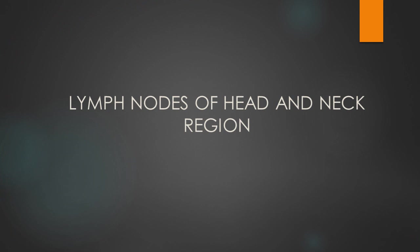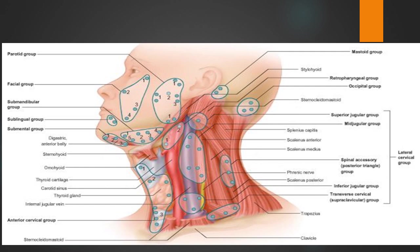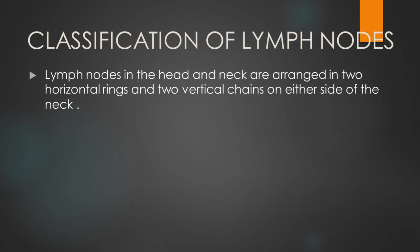Coming to the last part — the lymph nodes of the head and neck. In the figure, different types of lymph nodes are seen: parotid, submandibular, sublingual, and submental. Lymph nodes in the head and neck are arranged into two horizontal rings and two vertical chains on either side of the neck.